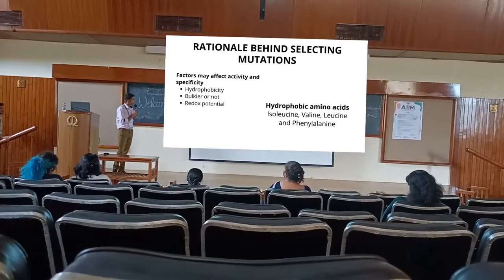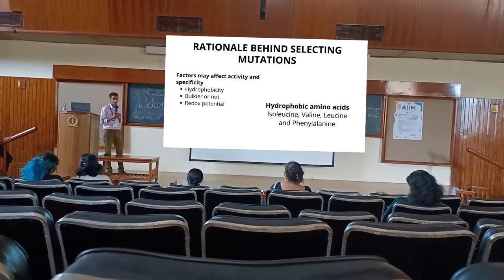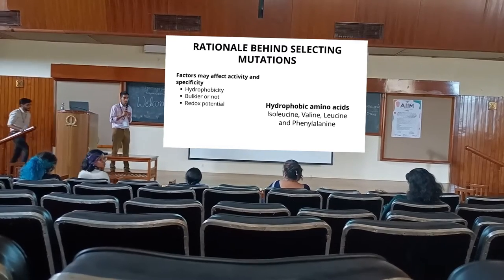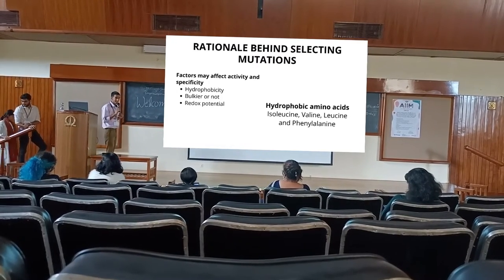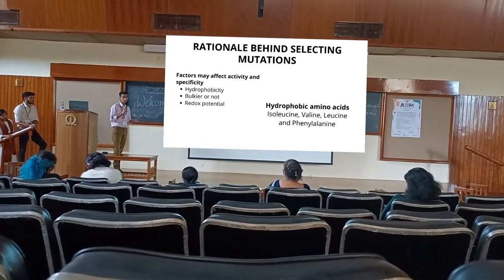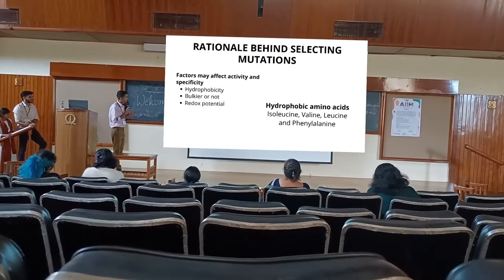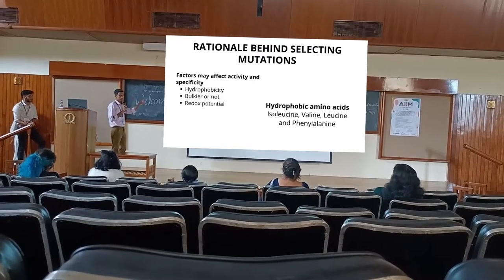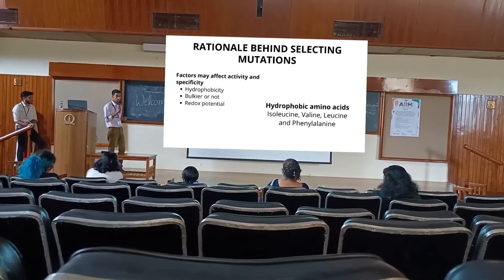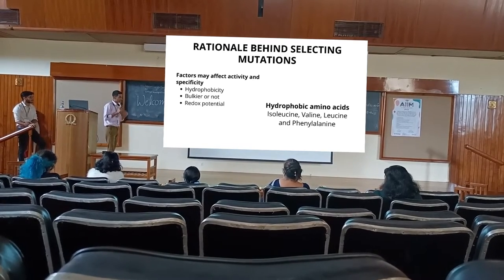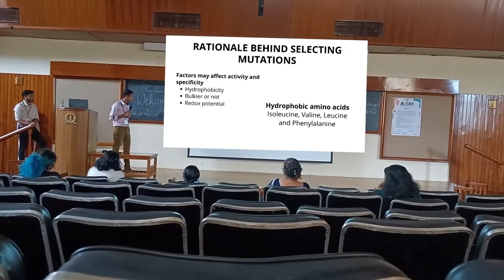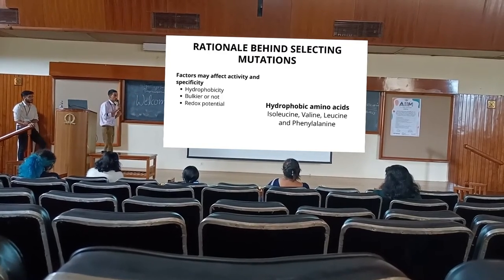We are discussing the binding site and T1 copper site because we need to create mutants to increase enzyme efficiency and make it more specific for tetracycline degradation. We cannot follow the conventional approach as it would take too much time. We are focusing on two regions: the T1 copper site with its surrounding amino acids, and the binding site very close to the T1 copper site.